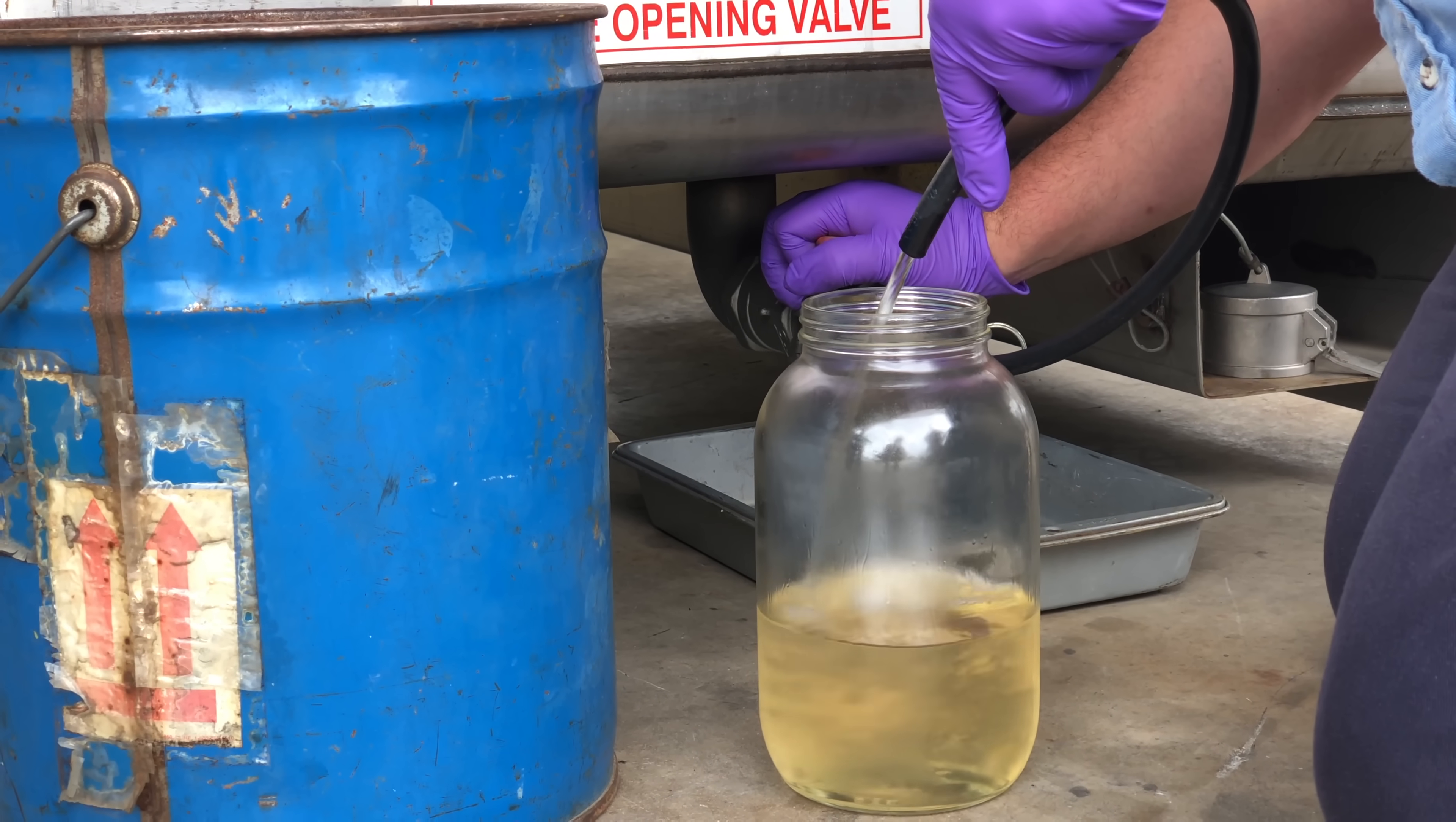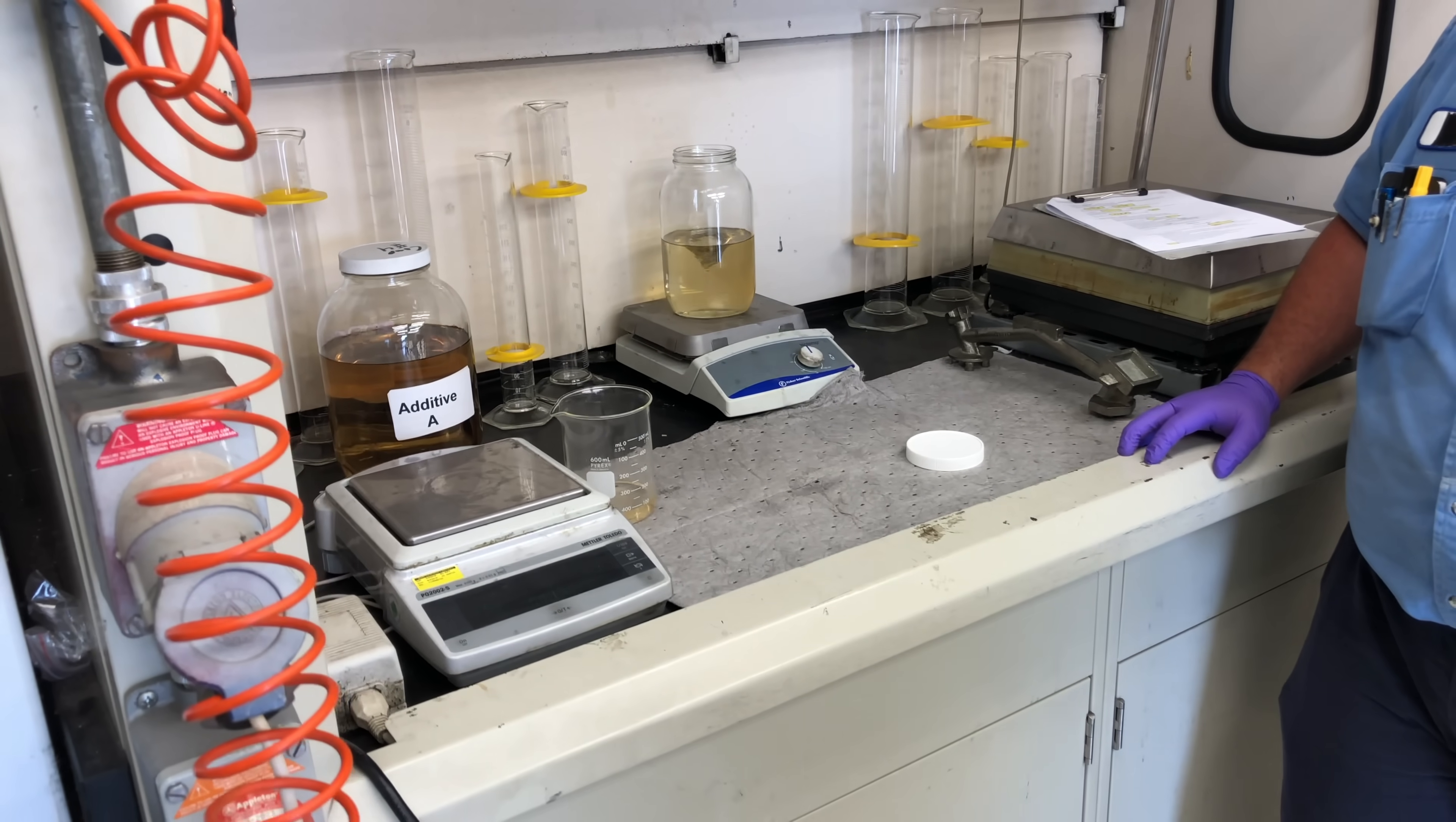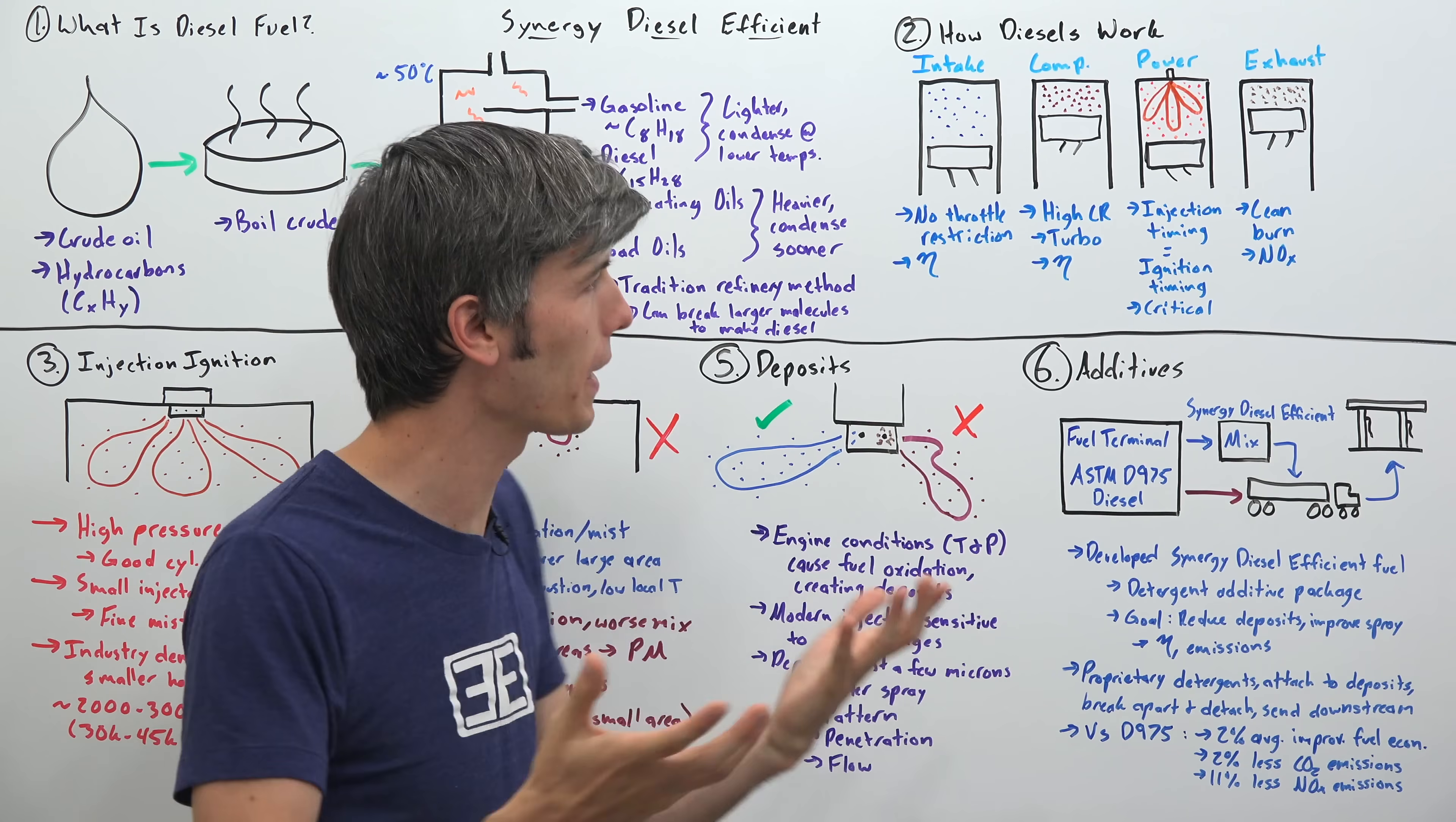Now this is the traditional way of creating diesel fuel. There are other ways to do it. So you can take those larger hydrocarbon molecules and break them apart into the size you do want to be used as diesel fuel. So what do we do with these hydrocarbons once we have them? Well, we burn them of course to make power.